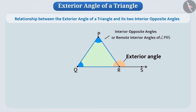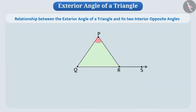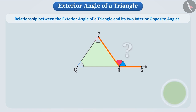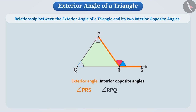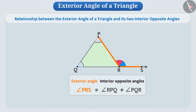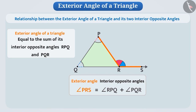The exterior angle of the triangle and its two interior opposite angles share an interesting relationship. Let's understand this for triangle PQR and its exterior angle PRS. Cut out or trace copies of angle RPQ and angle PQR, and place them adjacent to each other at angle PRS. As you can see, angle RPQ and angle PQR together entirely cover angle PRS. This shows that the measure of exterior angle PRS is equal to the sum of its interior opposite angles — angle RPQ plus angle PQR equals angle PRS.